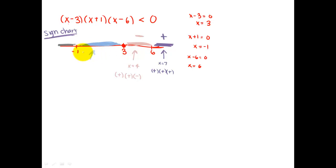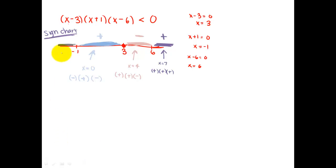Now the region between negative one and three: I'll choose zero because it's easy. Zero minus three is negative, zero plus one is positive, and zero minus six is negative. A negative times a positive times a negative is a positive — so that region is positive. Now the region less than negative one: I'll choose negative two. Negative two minus three is negative, negative two plus one is negative, and negative two minus six is negative. A negative times a negative is a positive, times a negative is a negative — so that region is negative.